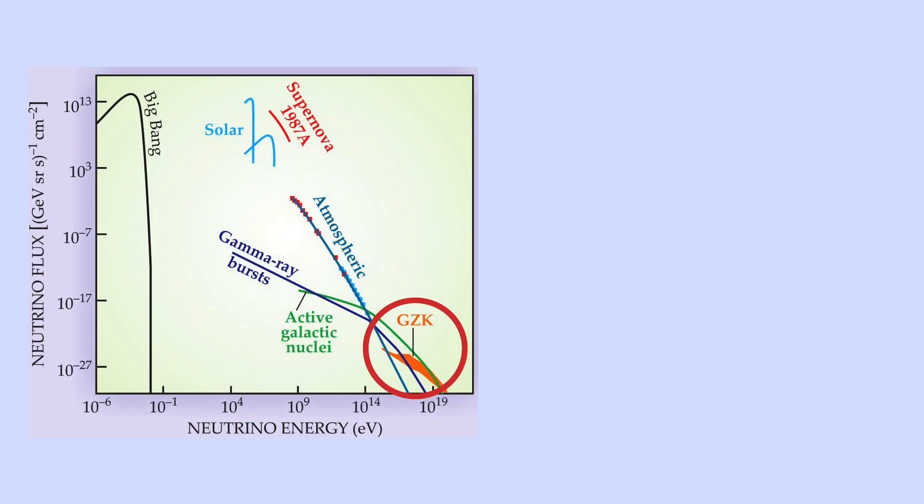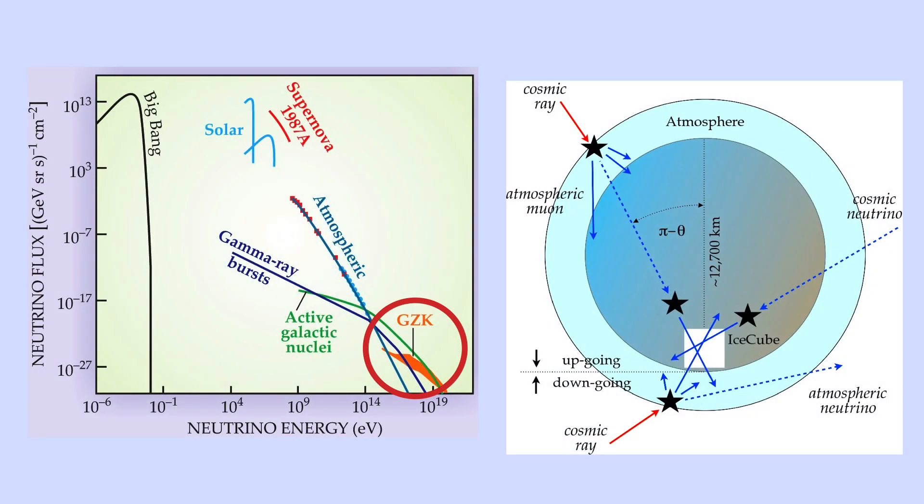These cosmogenic neutrinos lie on the very high energy end of our spectrum, often called the GZK neutrinos. These neutrinos are coming from interactions between cosmic rays and CMB photons. And so far, we have yet to detect any of these ultra-high energy neutrinos.